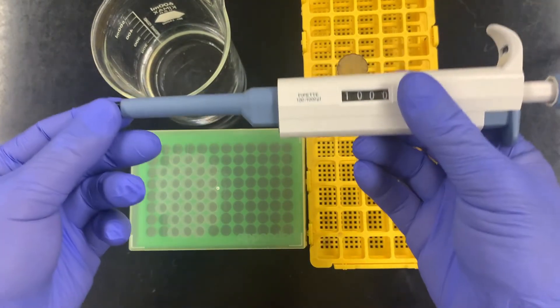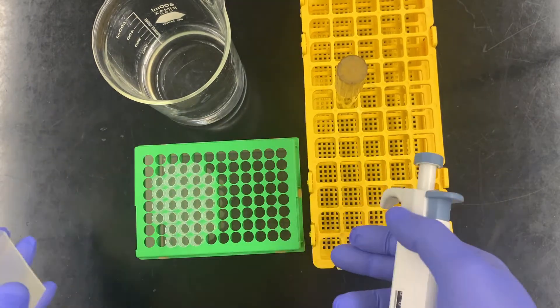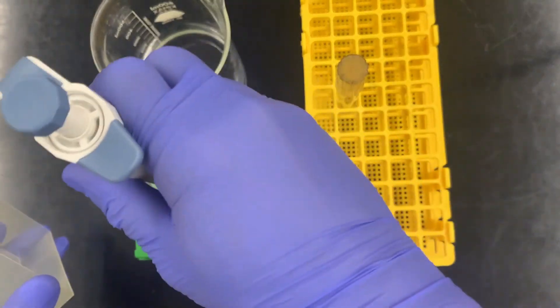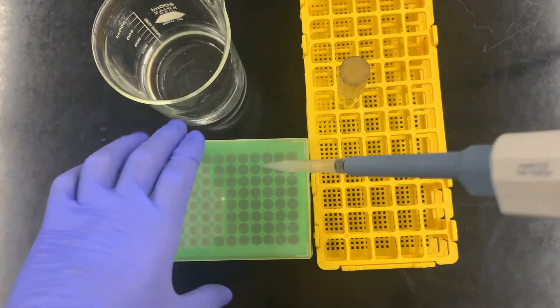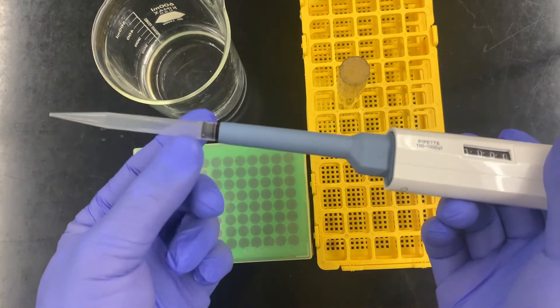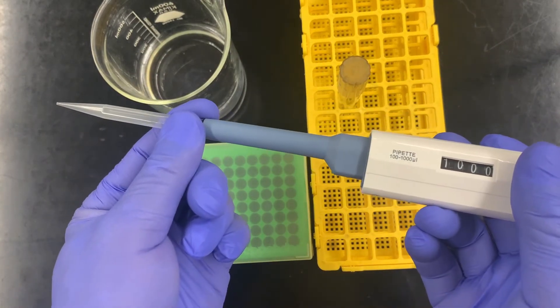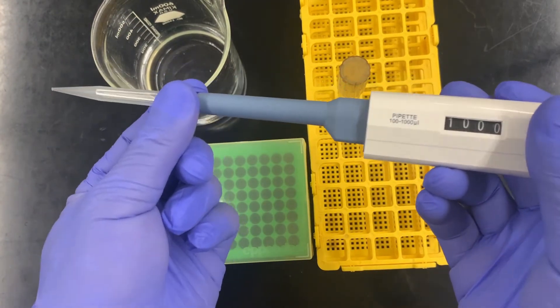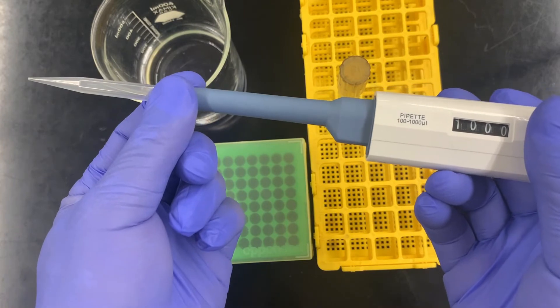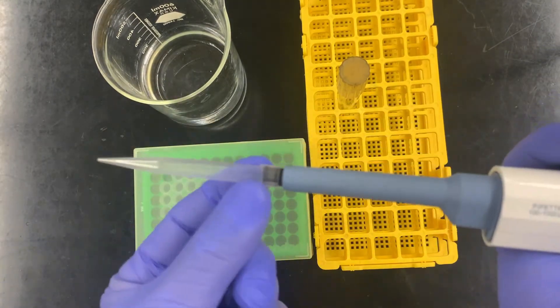In order to get any type of liquid, we need to use tips. Simply open, keep it sterile, grab it, and close the box. You want to make sure that the tip is snug. Just a gentle push should be sufficient. Sometimes if it feels loose, you can give it a bit of a push. Keep things sterile. Just a little bit of a push, don't smash into the box. Just a gentle, snug push should be sufficient.